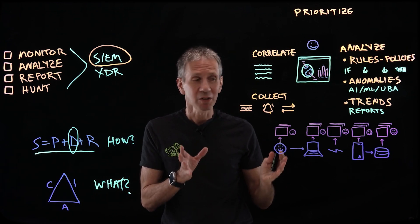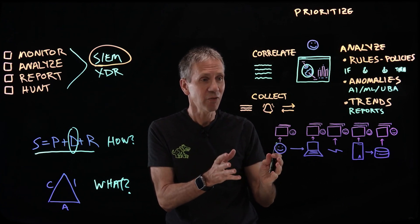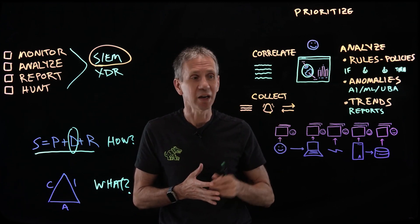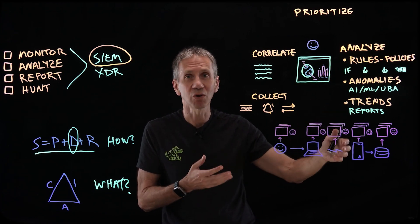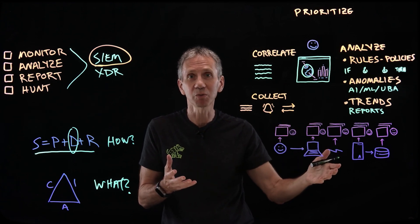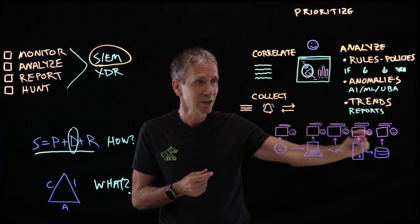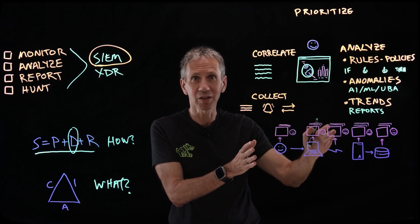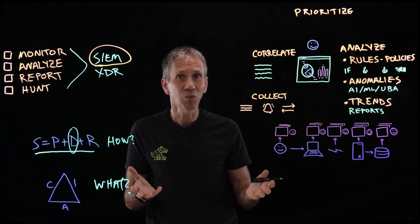What does a SIEM do? Each security domain — identity, access, endpoint, and so on — could be a source of security information. Typically, there's a separate security management console unique to each domain. You end up with multiple consoles and multiple analysts with specific domain knowledge. This is very expensive, and there's no consistent single view of what's happening — the left hand doesn't know what the right hand is doing. If an attacker hits multiple systems, it generates alarms everywhere and people chase the same problem inefficiently. This is why the SIEM came into existence.